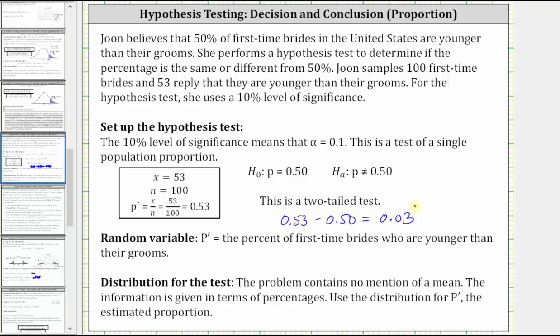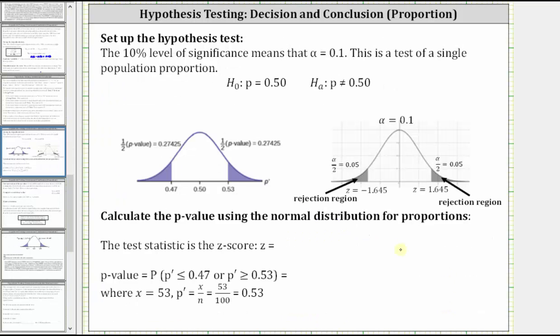Notice there is no mention of a mean. The information is given in percentages, which is why we know the problem involves a proportion. Because we have a proportion, we know the test statistic is a z-score.